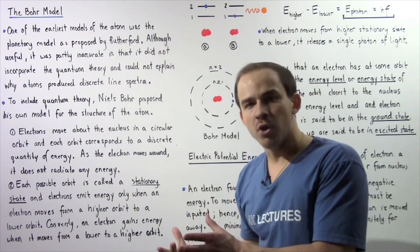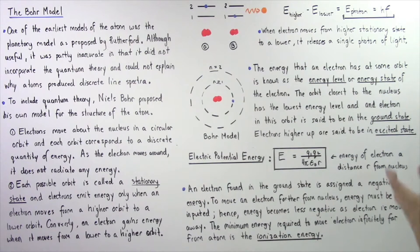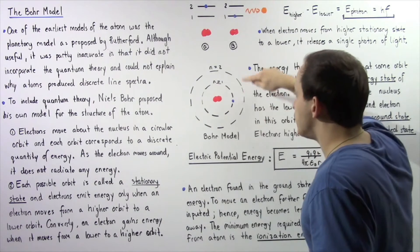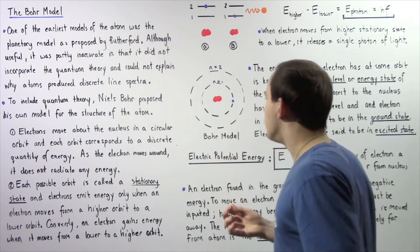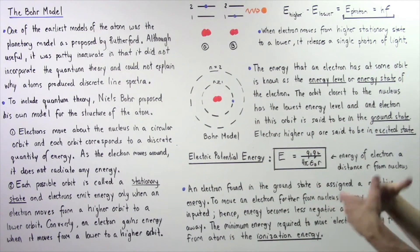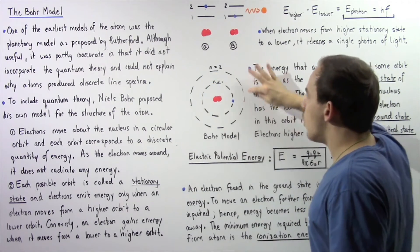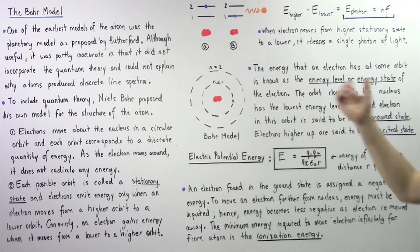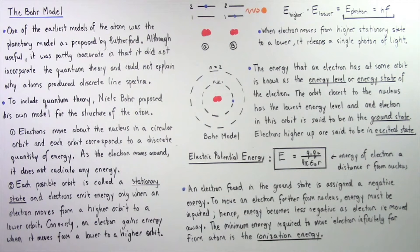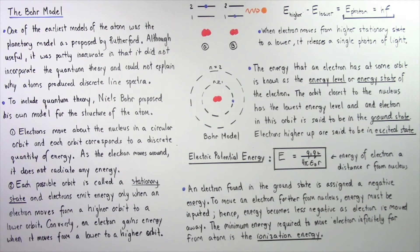The following diagram describes the Bohr model. We have the first orbit, which has N equals 1. N is known as the principal quantum number — it designates which orbit we are referring to. This electron is found in orbit number one, but we also have orbit number two that is empty in this particular case. The energy that an electron has at some orbit is known as the energy level or energy state of that particular electron or orbit.